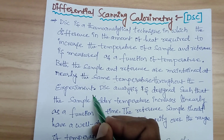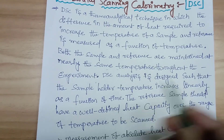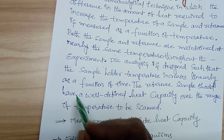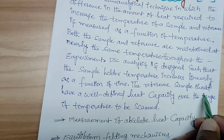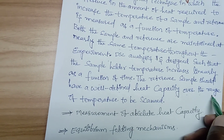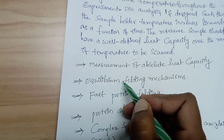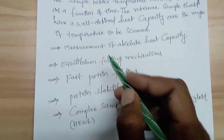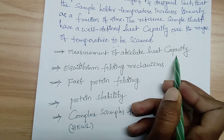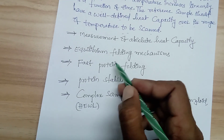A special feature of DSC is that the analysis is designed such that the sample holder temperature increases linearly as a function of time. The reference sample should have a well-defined heat capacity over the range of temperatures to be scanned. One key application is the measurement of absolute heat capacity — for example, measuring the absolute heat capacity of a protein using DSC.